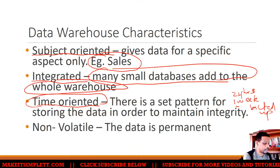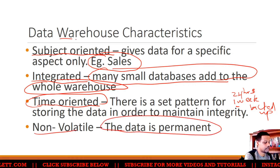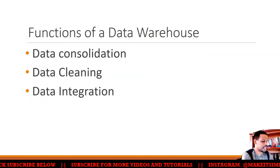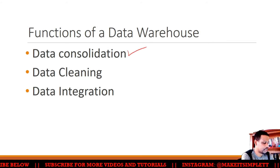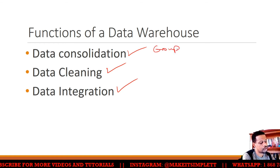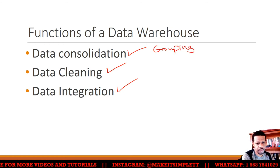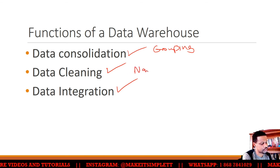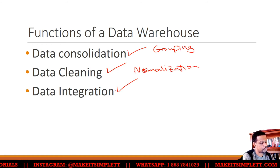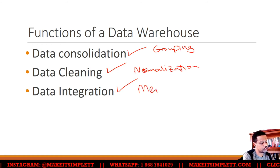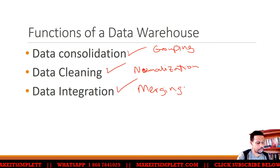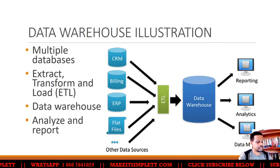The data warehouse is non-volatile, meaning the data inside is permanent. If the data is lost, your reports will get messed up. The functions of a data warehouse include data consolidation — grouping all databases together — data cleaning, which is like normalization, and data integration, which is merging tables.